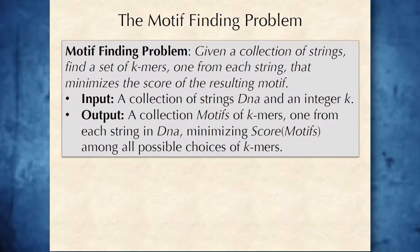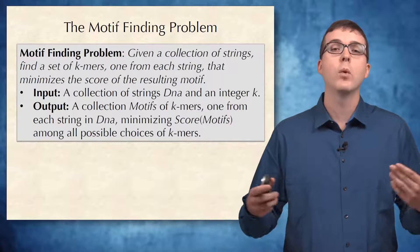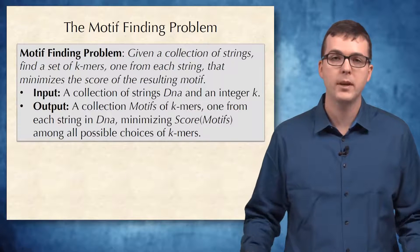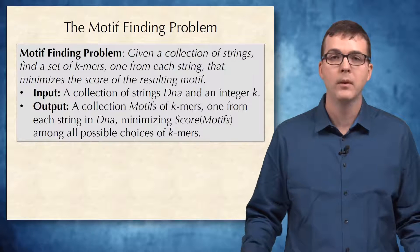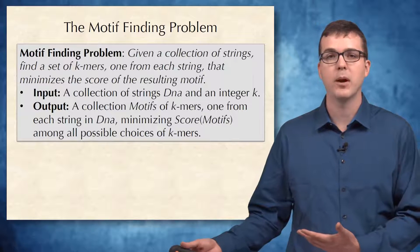We can now restate our goal as choosing a collection of K-mers from the underlying strings in order to minimize this score. We now have a more appropriate computational problem, which we call the motif-finding problem.